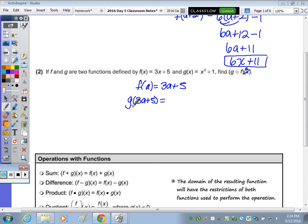Substituting this now for the X, right here, this would be 3A plus 5 squared plus 1. So I have to square that. I don't just square the 3A, I don't just square the 5. We have to expand and FOIL. So go ahead and do that, and then we'll finish by adding the 1.